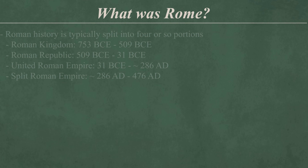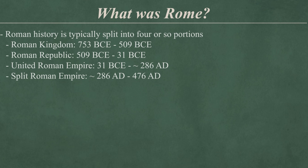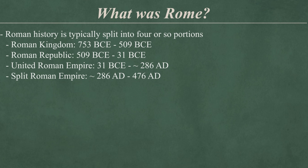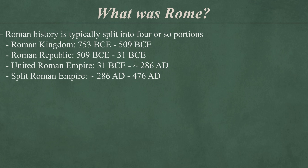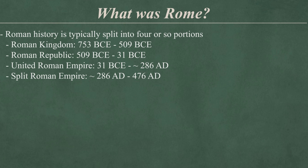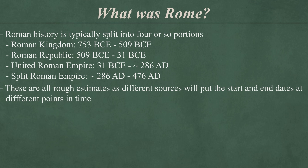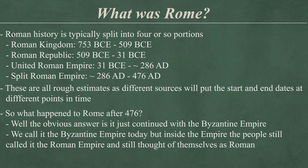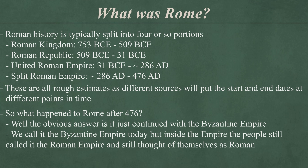Roman history is typically split into four or so portions. We have the Roman Kingdom, from around 753 to 509 BCE. Then we have the Roman Republic, from 509 to 31 BCE. Then we have the United Roman Empire, from 31 BCE to around 286 AD. And finally, we have the period of the split Roman Empire, from 286 to the fall of the Western Roman Empire in 476. Those years are all rough estimates — some sources will put the beginning and end of various periods at different points, but this is roughly the agreed upon start and end dates. It's at this point that we have to start asking: who is the successor to Rome?